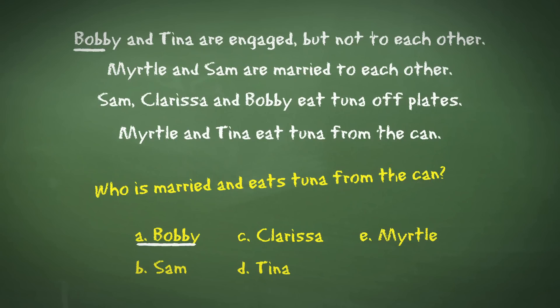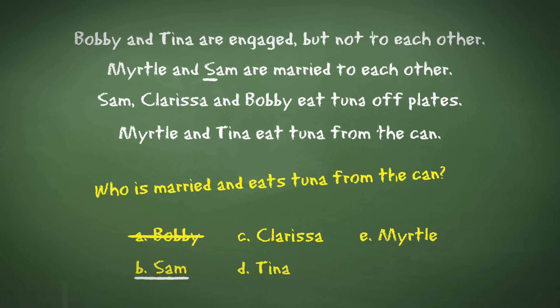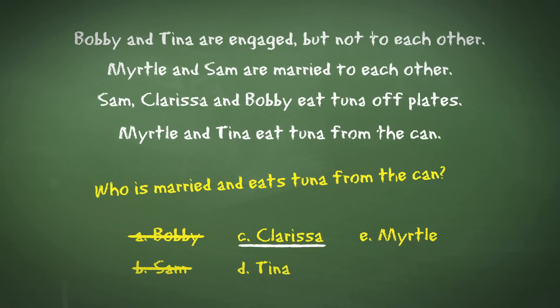Starting with Bobby, we can see that he is engaged from the first statement and eats tuna off a plate, so it can't be him. Sam is married so meets the first part of the required criteria. However, he also eats tuna off plates, so that rules out Sam as well. Clarissa is only mentioned once where it says she eats tuna off plates, so it can't be her.